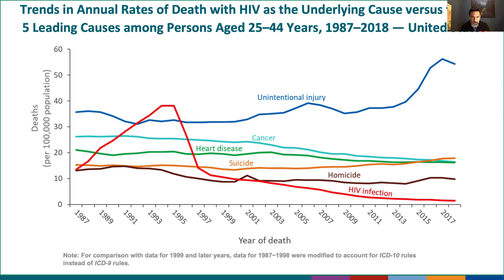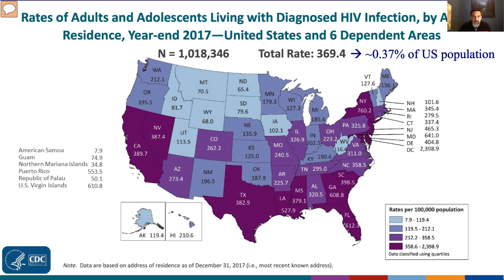Vital statistics data really showed the impact of HIV on the death rate — it was the number one cause of death for a few years in younger age groups. As of the end of 2017, it was estimated that there were about a million people living with diagnosed HIV in the US — a rate of about 369 per 100,000, or about 0.37% of the US population.